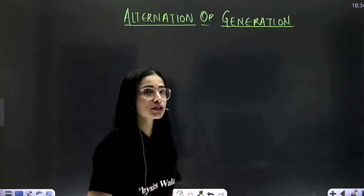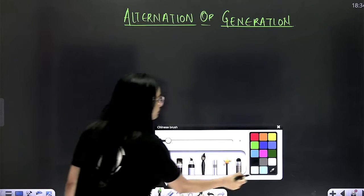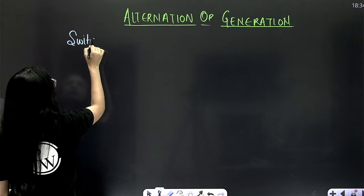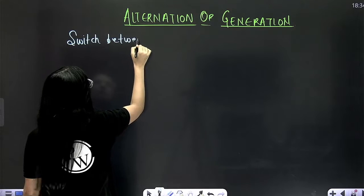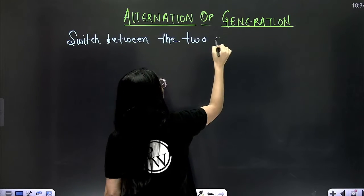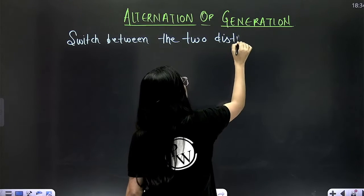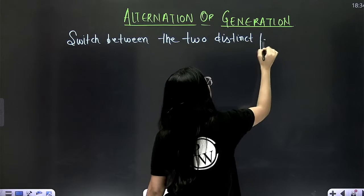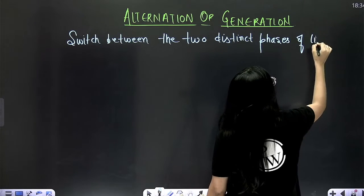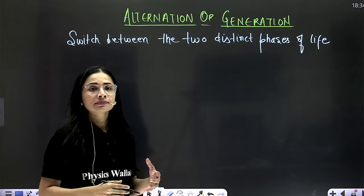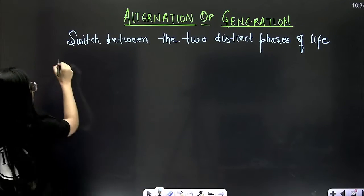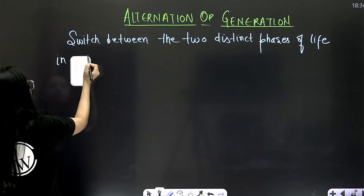So what is alternation of generation? It is simply the switch between the two phases of life, the two distinct phases of life during sexual reproduction or in a sexually reproducing organism.